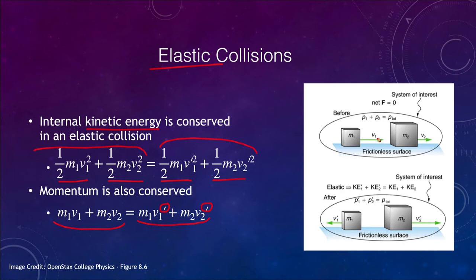In our diagram, mass one moves with velocity one and collides into a second mass moving with some velocity. Afterwards, one object moves back with some velocity and the other moves forward with a different velocity than before — note how the velocity is smaller before impact and much larger afterwards.